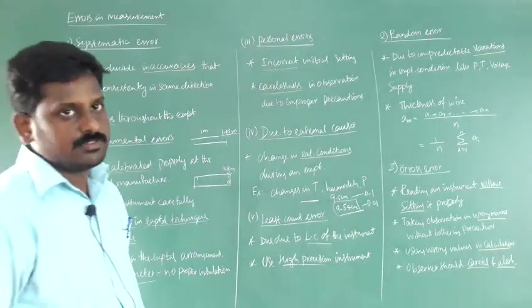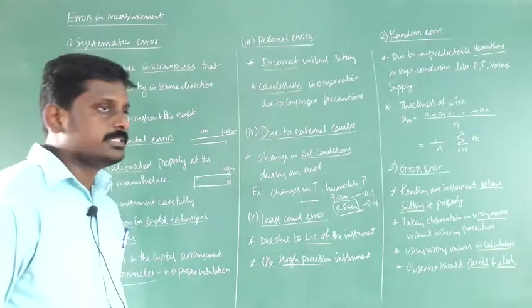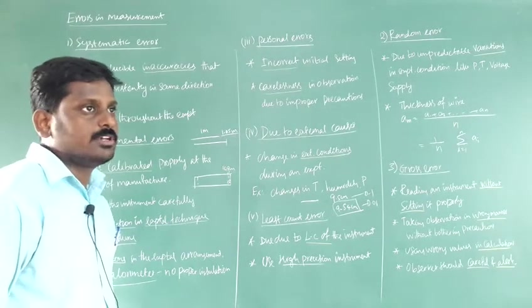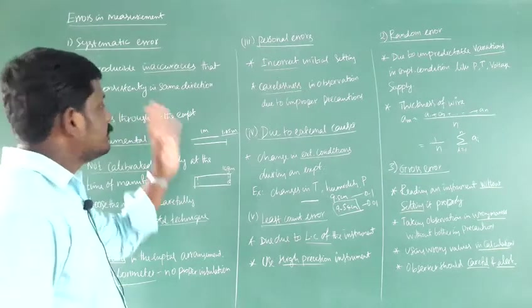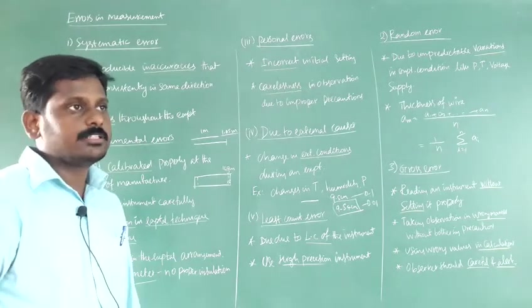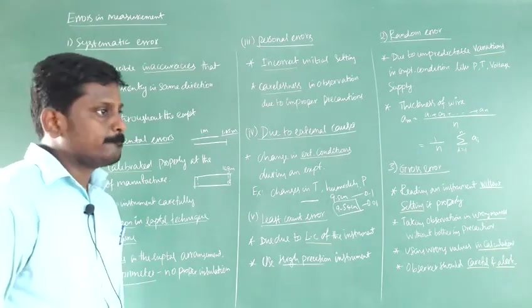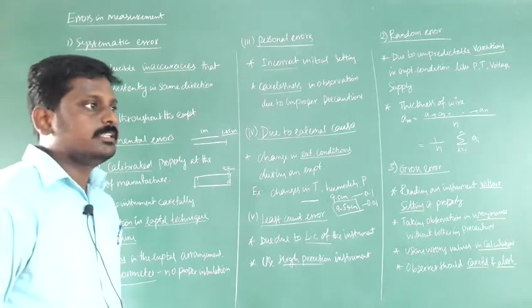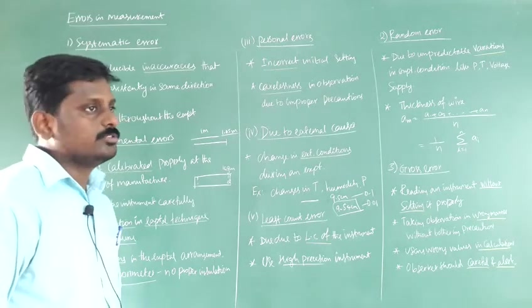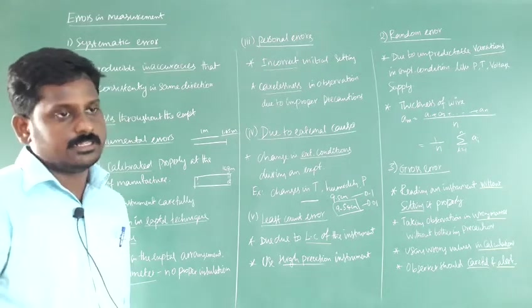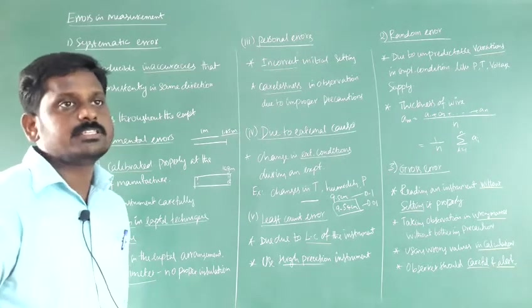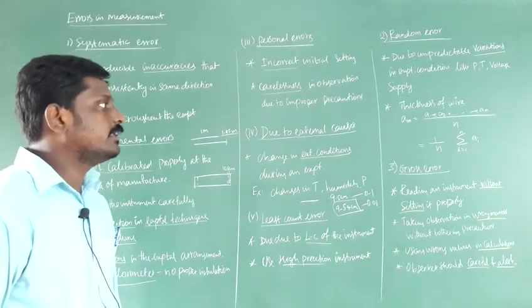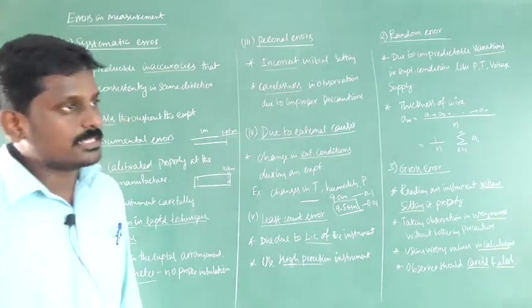Good morning students, 1100 Physics. In this class we are going to discuss about types of error. The error in the measurement — if you are doing some experiment, doing some measurement, there is uncertainty in the measurement, so there is an error. That uncertainty means error. There are three types of error: systematic error, random error, and cross error.